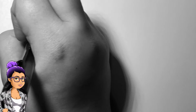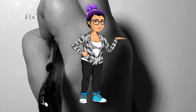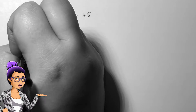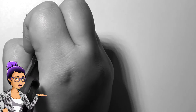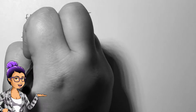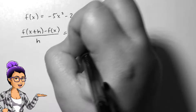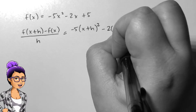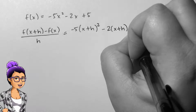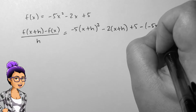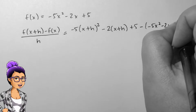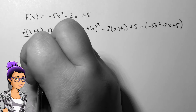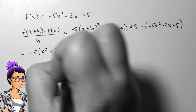Finding the difference quotient is one thing — it's simplifying it that can be tricky. Let's find and simplify the difference quotient for f of x equals negative 5x squared minus 2x plus 5. We'll first replace all these x's with x plus h, then subtract all of f of x. All of this is over h.